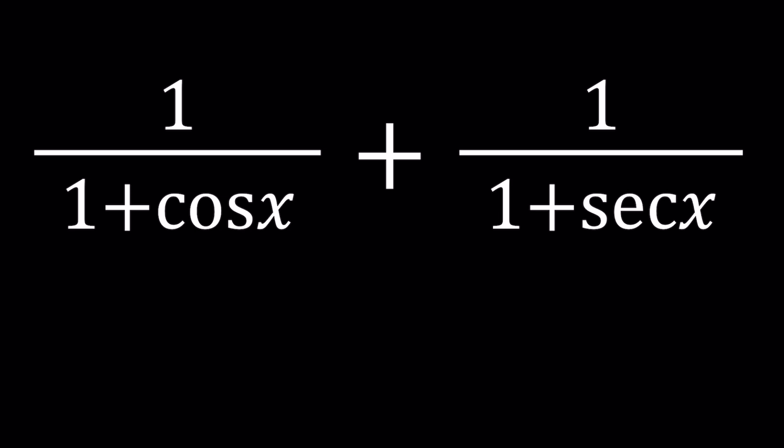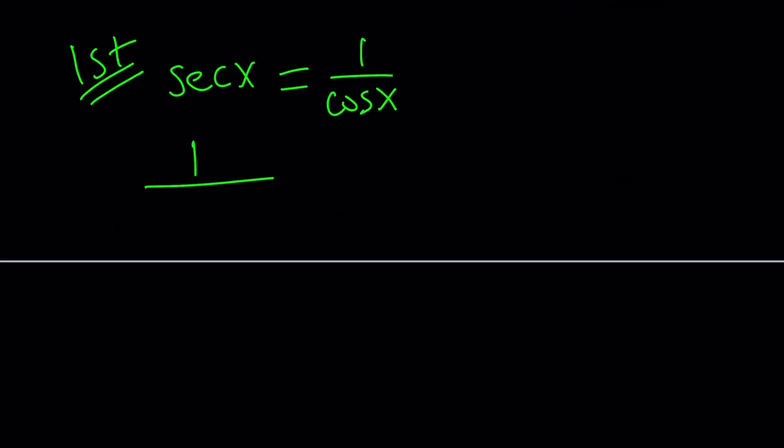I'll probably present a couple methods. The first one will be more technical, the others are less technical and less rigorous. Let's start with the first method. Notice that secant x can be written as 1 over cosine x. That's what I mean by reciprocals. So secant is the reciprocal of cosine. Let's go ahead and write it that way. We get 1 over 1 plus cosine x plus 1 over 1 plus 1 over cosine x. So replace secant with 1 over cosine.